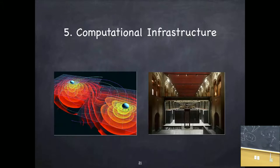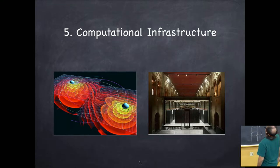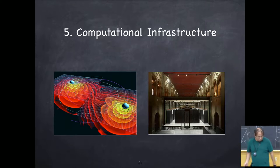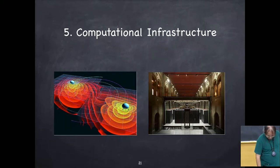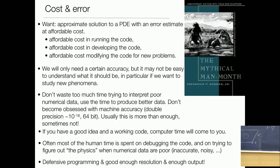I wanted to talk a little bit about how computational big computations are connected with some geometry in GR. Now I want to switch gears completely and talk about computational infrastructure — how does this work. Some slides are going to be very practical. Let's think a little bit about the cost and the error. You write some code, you want the errors to be small, but it should also be affordable.